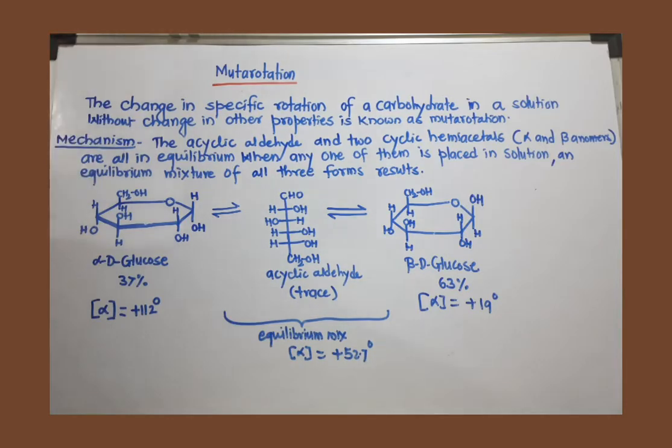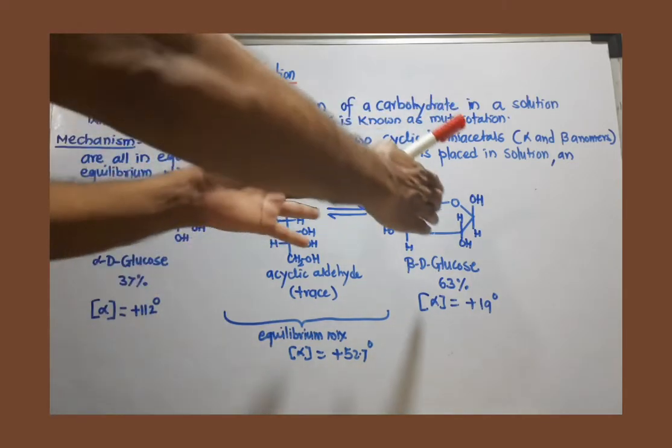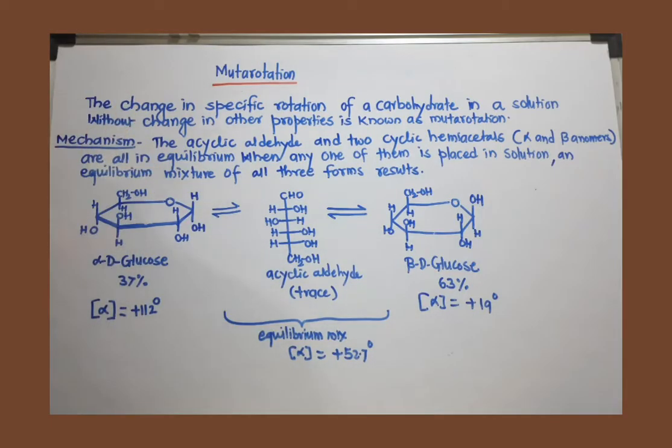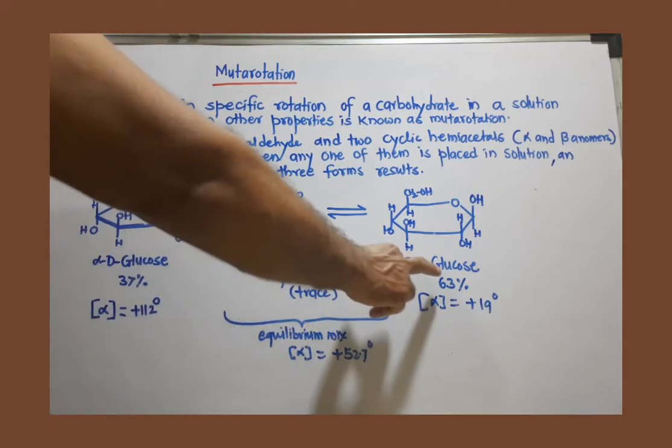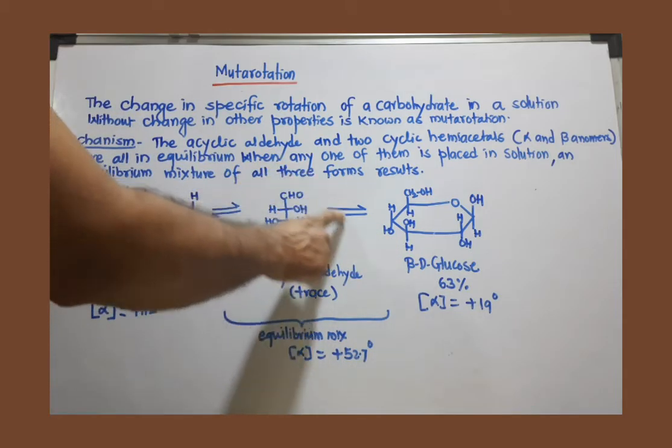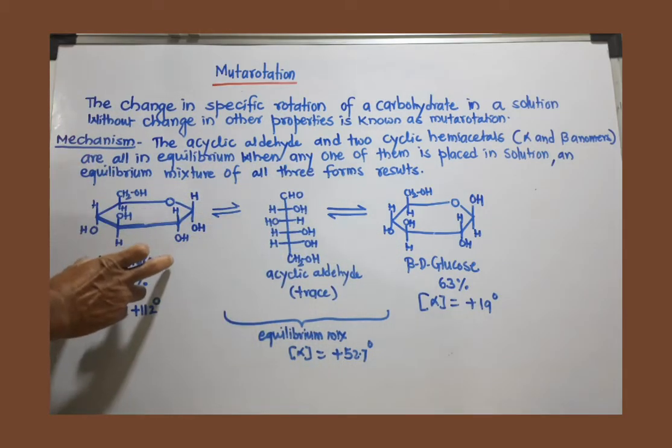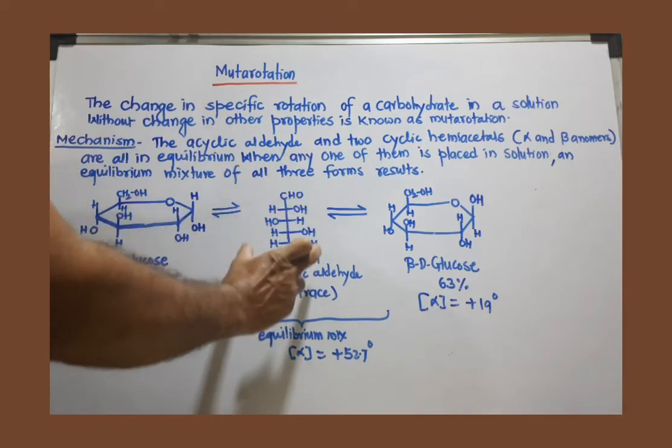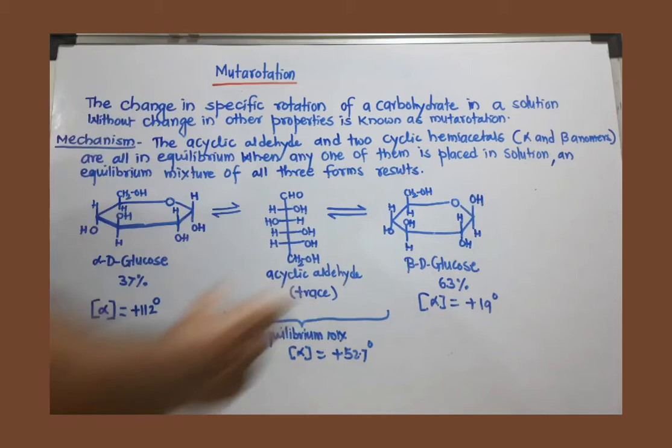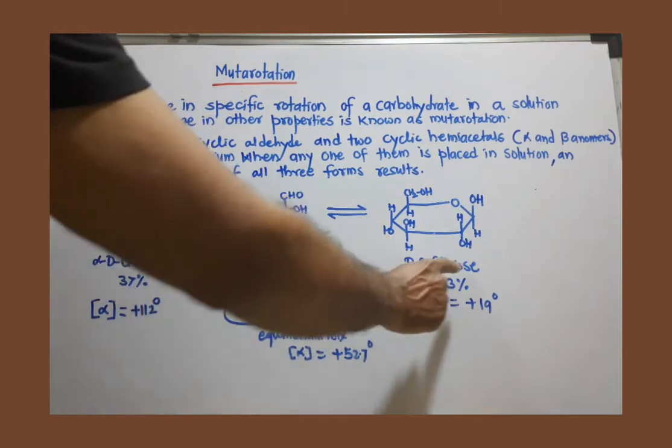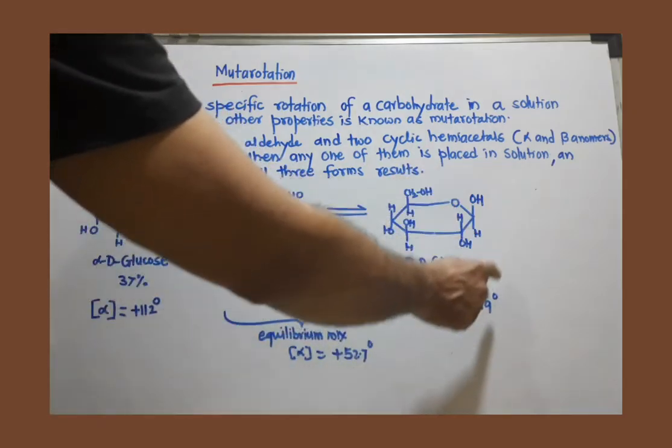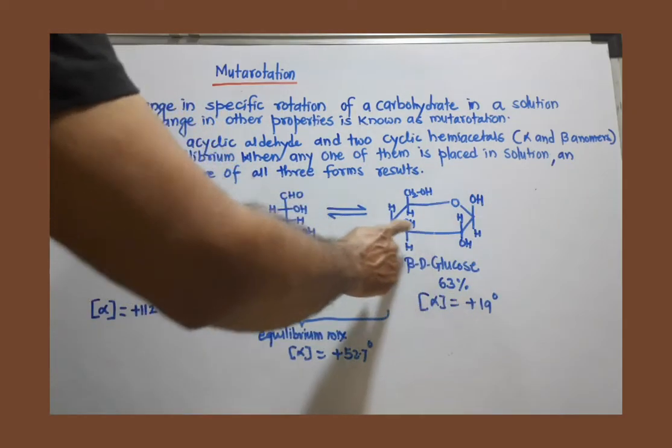Now we must be able to explain what chemistry is behind this change in specific rotation, which is given here in this mechanism. When any one of these two anomers is isolated and kept in solution, it is very soon converted to the other form through an acyclic aldehyde. Alpha-D-glucose is converted to the acyclic aldehyde, and then converted to the other anomer, beta-D-glucose. Or when we isolate beta-D-glucose and prepare its solution, it is very soon converted to alpha-D-glucose through the acyclic aldehyde.